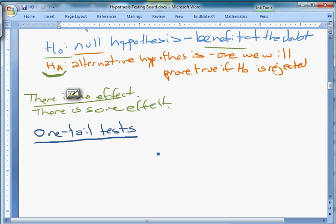You're gonna have H0 is mu greater than or equal to mu zero, HA mu less than mu zero. This is a left-tailed test.